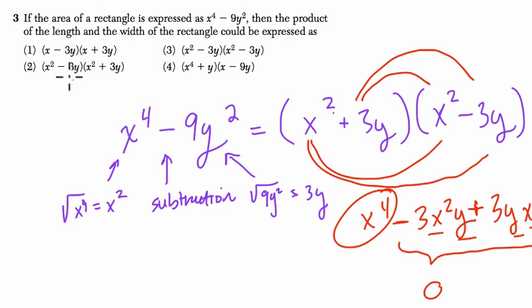When we go through our choices, the one that matches closest to ours is this one. Just notice the two terms are in the opposite order of ours, and that's okay because of the commutative property of multiplication.